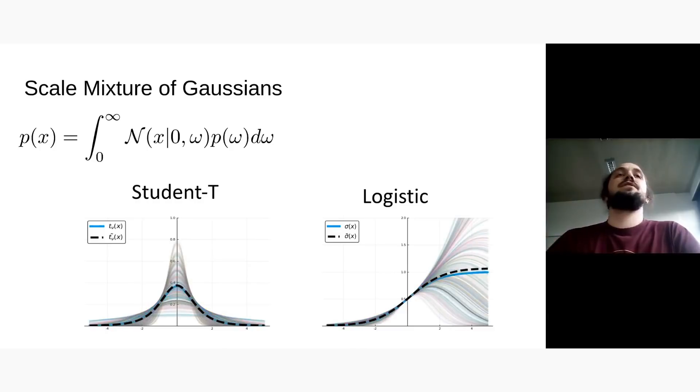So here is this integral from zero to infinity. So you can just imagine an infinite sum of Gaussians with a varying variance. And here is variance omega. We have put a prior on it. And given the prior, we can actually have different likelihoods.